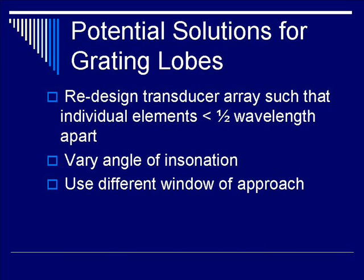What are potential solutions for eliminating grating lobes? First, you can redesign the transducer array such that the individual elements are less than one-half wavelength apart from each other. You can also vary the angle of inclination, or you can use different scanning windows or approaches to eliminate the presence of this artifact.